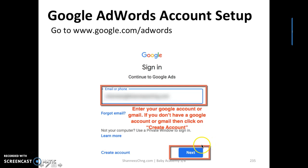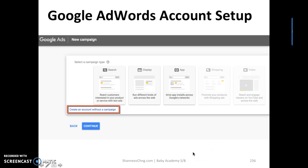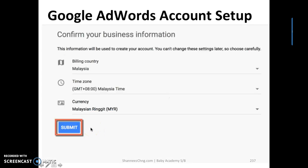Once you've entered your Google account, click on 'Next', then click on 'Create an account without a campaign', followed by 'Continue'.